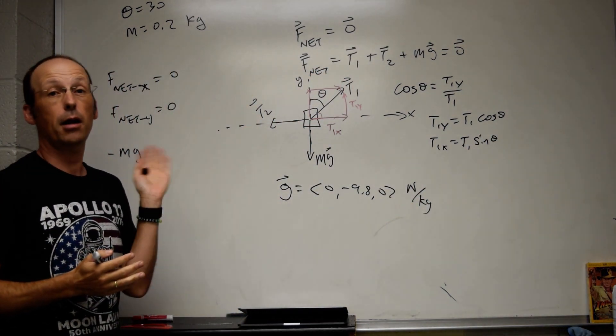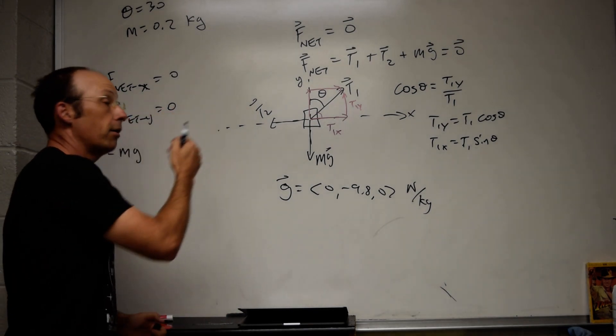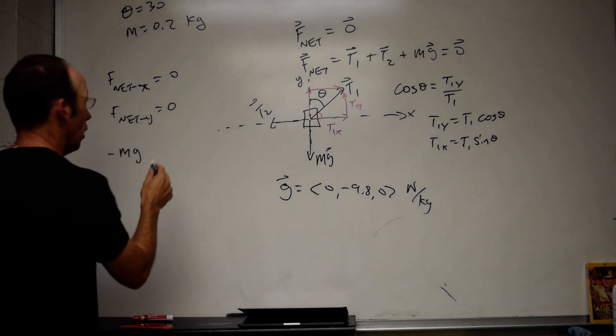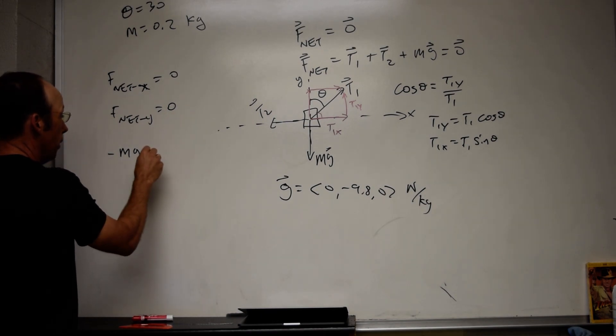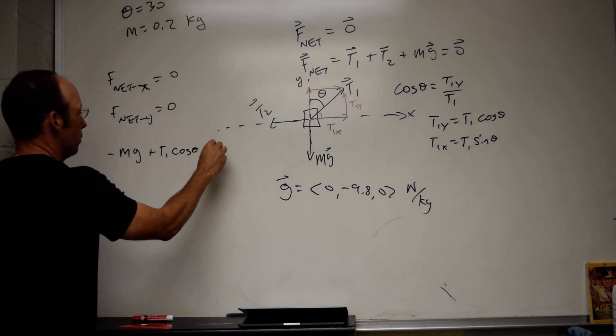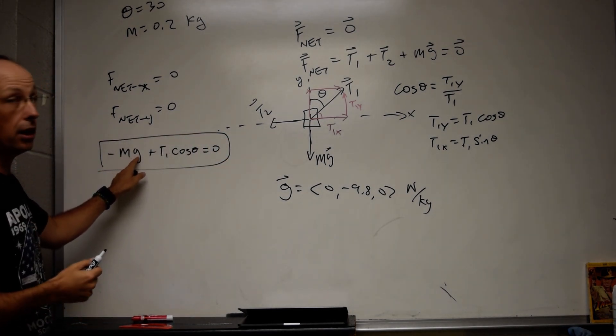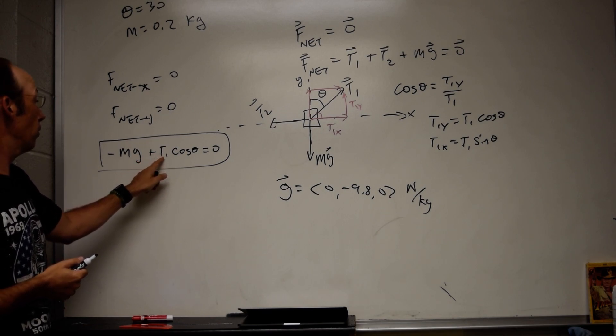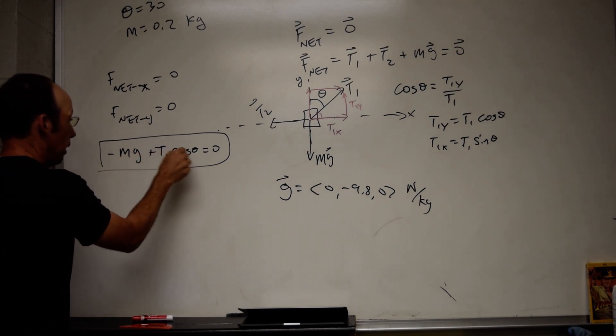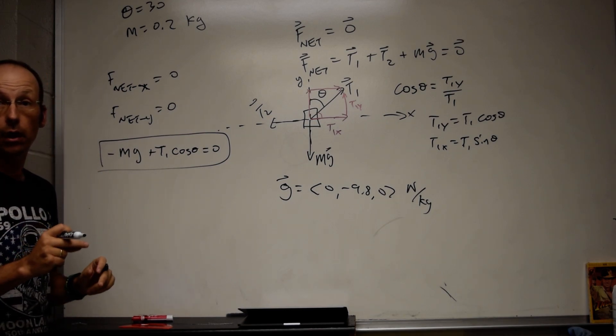Okay. The problem here is a lot of people just automatically think cosine is the x component. But it depends on your picture. So I'm going to put this as the y component as plus T1 cosine theta. Equals zero. That's important. Okay. I know m. I know g, which is the magnitude of g, 9.8. I do not know T1, but I do know theta. I can go ahead and solve for T1.